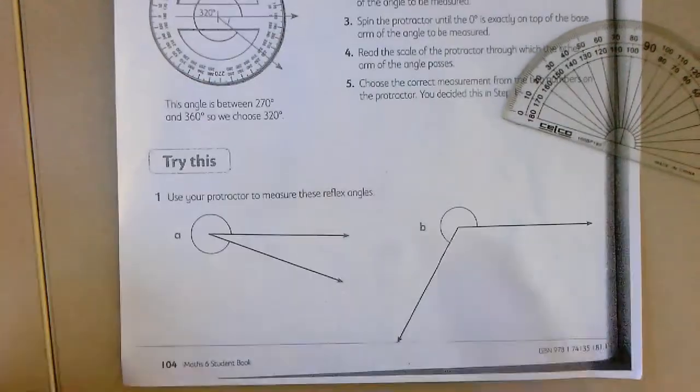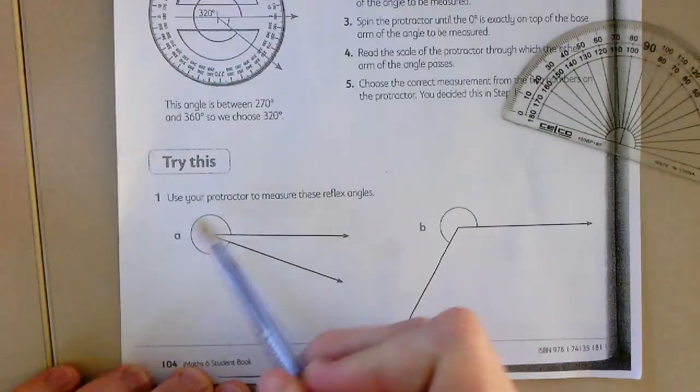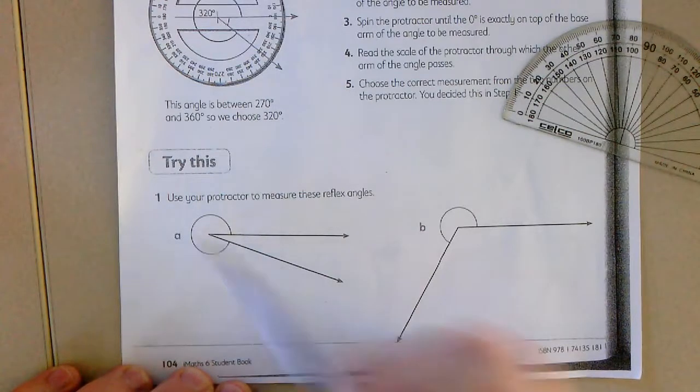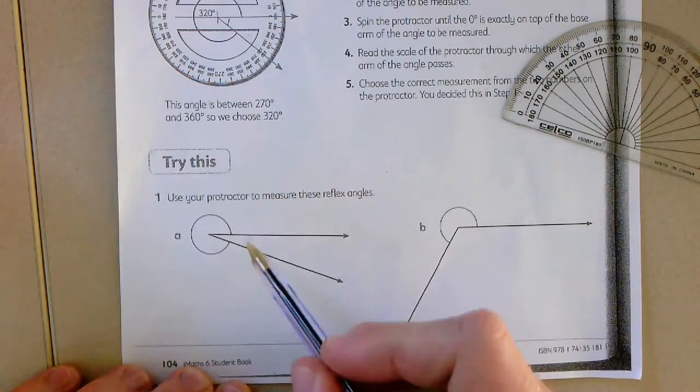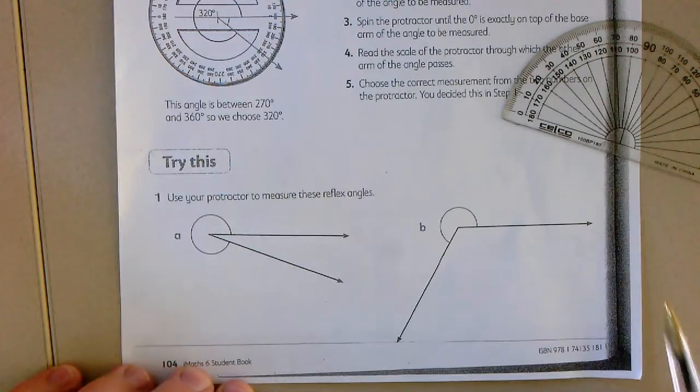So remember, a reflex angle means it is larger than 180 degrees, but it's less than a full revolution or less than 360 degrees.